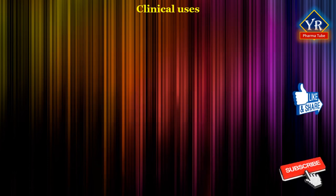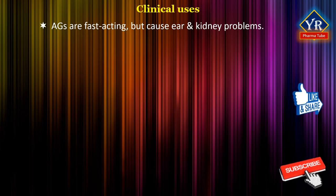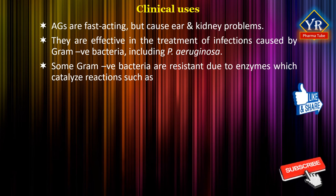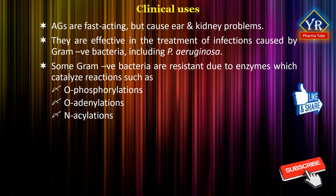Aminoglycosides are fast-acting but they can also cause ear and kidney problems if the dose levels are not carefully controlled. They are effective in the treatment of infections caused by aerobic gram-negative bacteria including Pseudomonas aeruginosa. Indeed, they used to be the only compounds effective against that organism. Some gram-negative bacteria are resistant to aminoglycosides due mainly to enzymes which catalyze reactions such as orthophosphorylations, orthoadenylations and N-acylations. Resistance can also occur from alterations of the ribosomes such that they bind aminoglycosides less strongly or by less efficient uptake mechanisms.